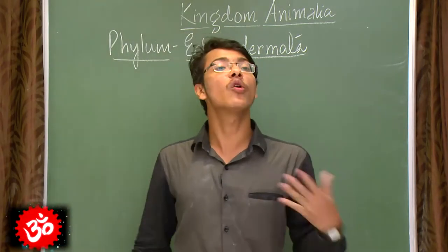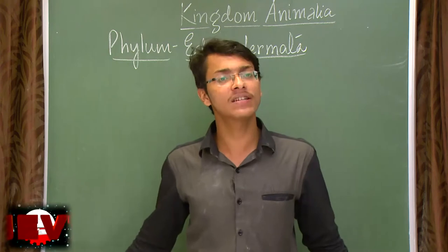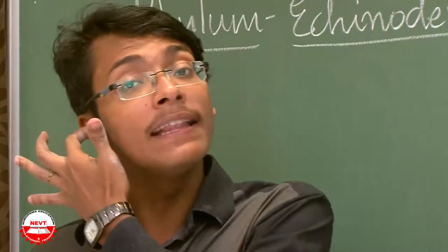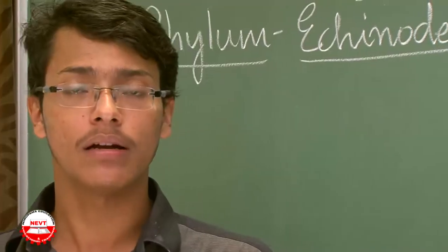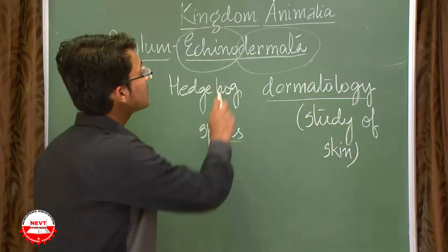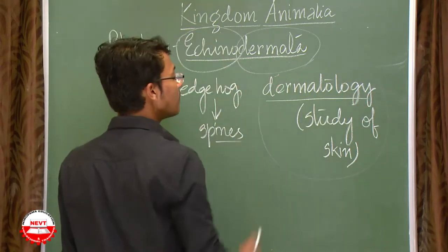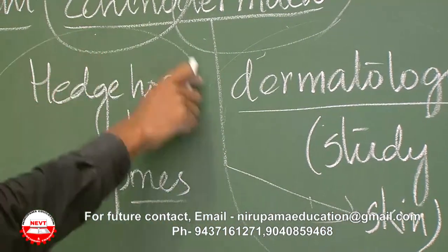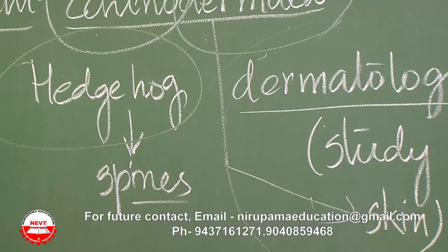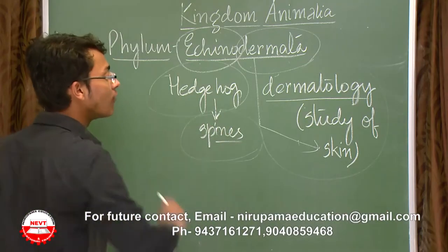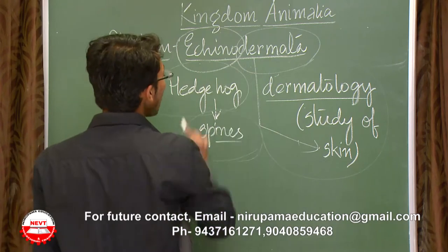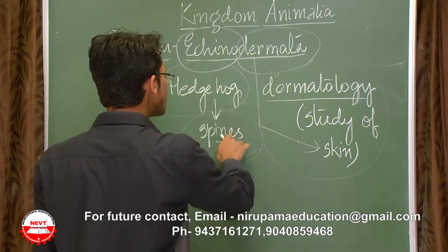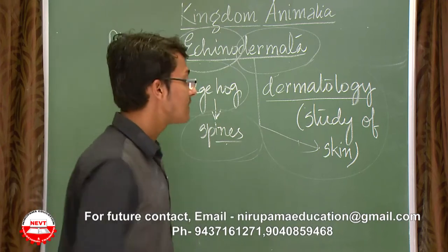The Mollusca were mainly aquatic in nature, inhabiting marine or freshwater places. Moving to the next phylum — Phylum Echinodermata. Breaking the term down: 'dermata' comes from dermatology, meaning skin, and 'echino' comes from hedgehog, an animal covered entirely with spines. So Echinodermata means those animals whose skin has the presence of spines.